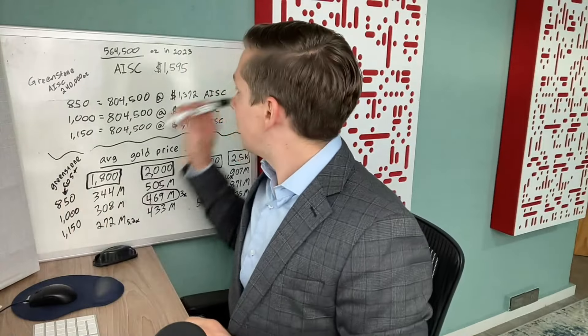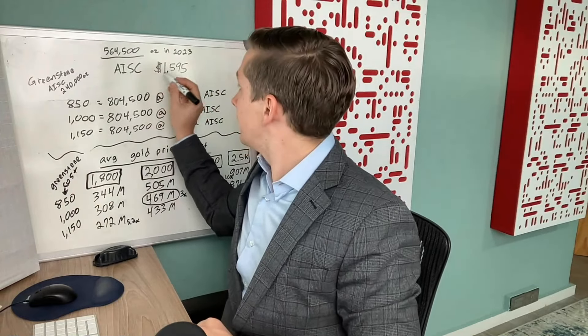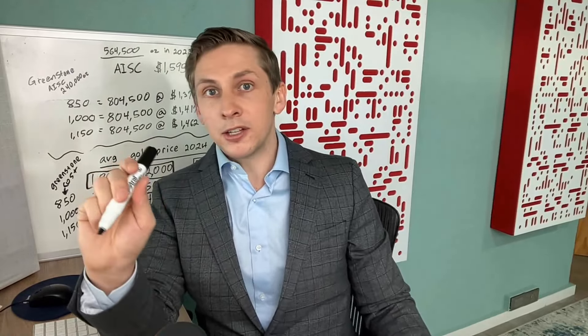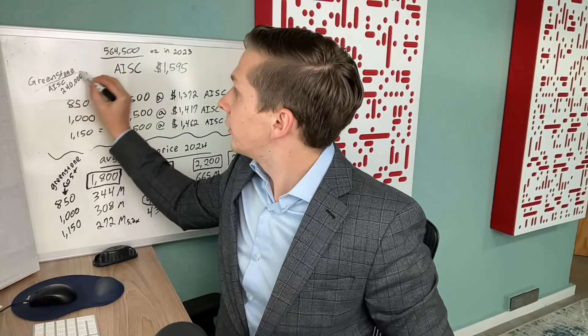We don't know the all-in sustaining cost, the AISC, for the entire year. That's what it cost them to produce an ounce of gold. But we do know that for the first three quarters of 2023 it was $1,595. Equinox is going through a big change right now because they're building the Greenstone mine in Canada.